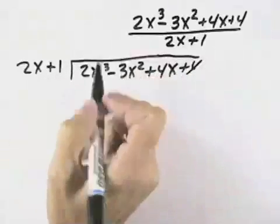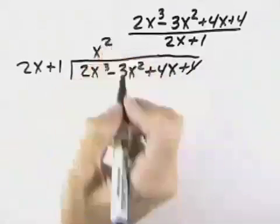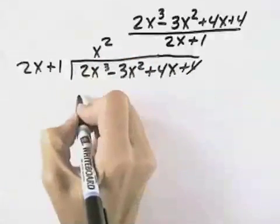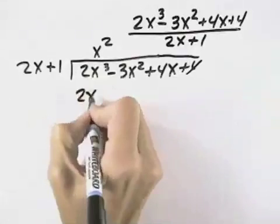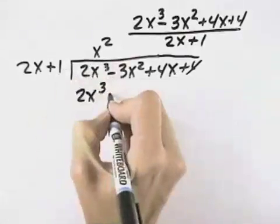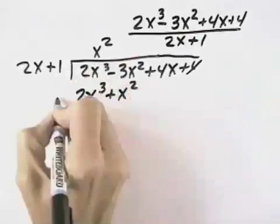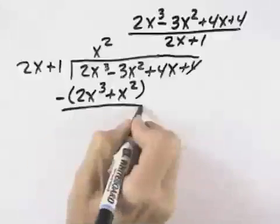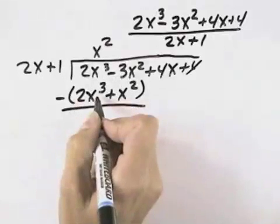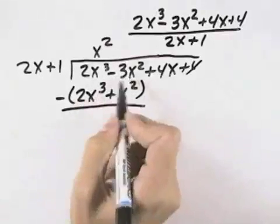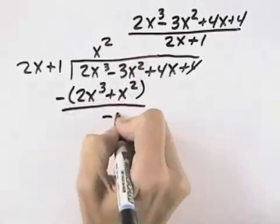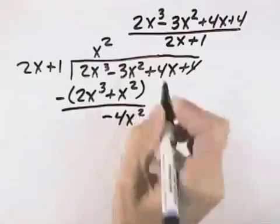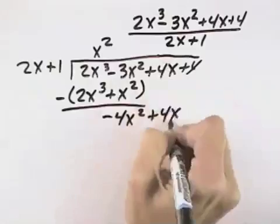In this case, 2x goes into 2x cubed x squared times, and when we multiply, x squared times 2x is 2x cubed, x squared times 1 is plus x squared. When we subtract, 2x cubed minus 2x cubed is 0, and negative 3x squared minus 1x squared is negative 4x squared. And we bring down our next term of 4x.